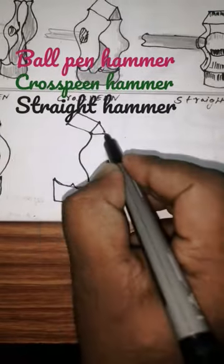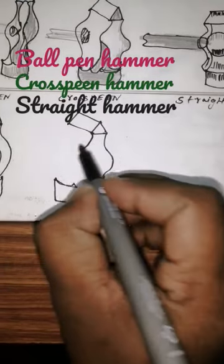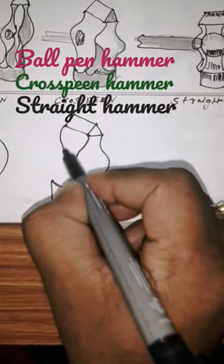Draw a circle like this. And join this line like this.